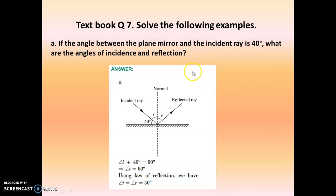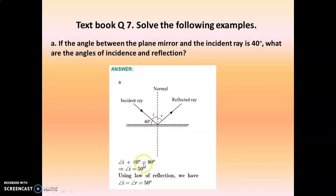Moving to your textbook, question 7, solve the following examples. First: if the angle between the plane mirror and the incident ray is 40 degrees, what are the angle of incidence and reflection? This angle is given as 40 degrees, and the angle of incidence plus 40 equals 90 degrees. So 90 minus 40 equals 50 degrees. Therefore, angle of incidence equals angle of reflection equals 50 degrees.